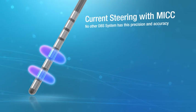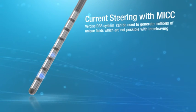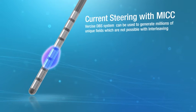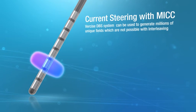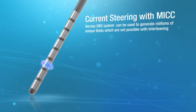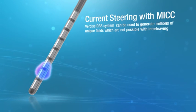Therefore, each contact powered by the Vercise DBS system can be used to generate millions of unique fields, each area or setting having different amplitudes, pulse widths, rates, and contact configurations, which are not possible with interleaving.